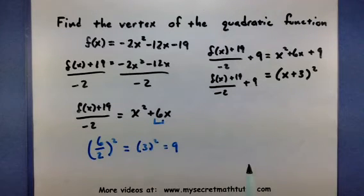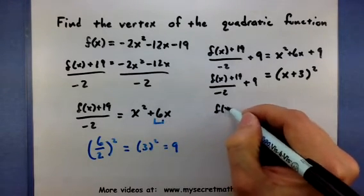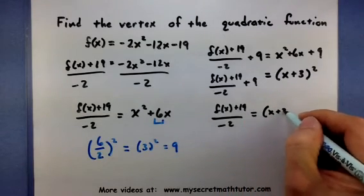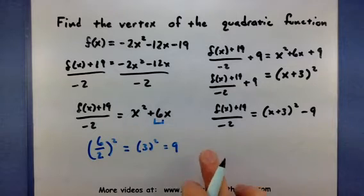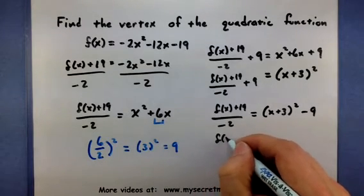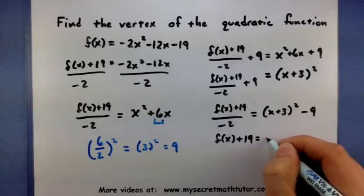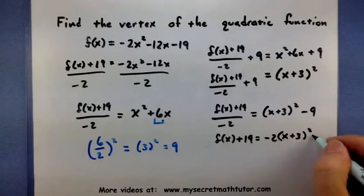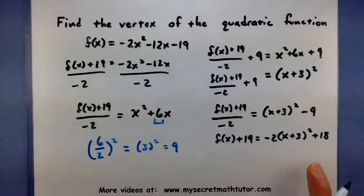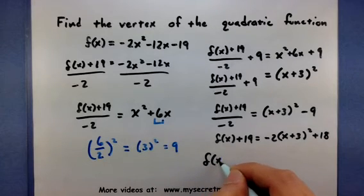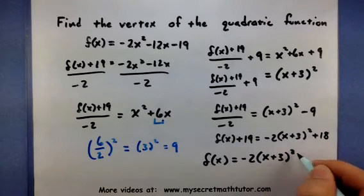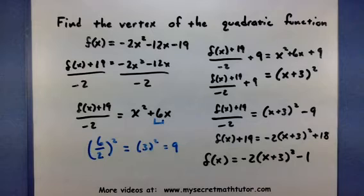We basically do all the steps in reverse to get it to the other side. So subtract 9, multiply by negative 2, and subtract 19. 18 minus 19 is minus 1.